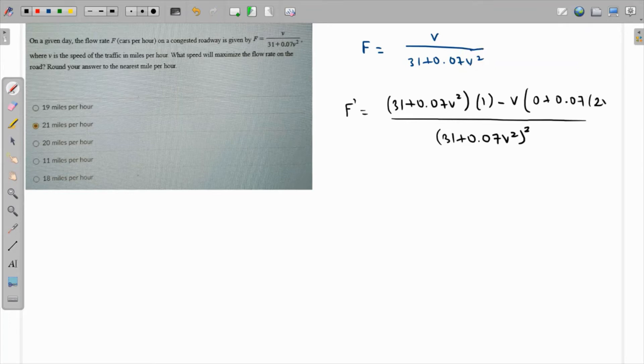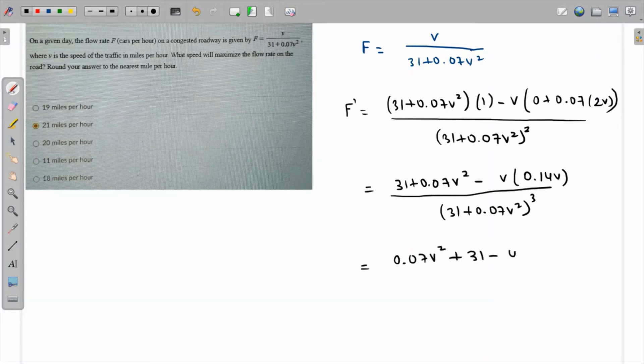This becomes (31 + 0.07V² - 0.14V²)/(31 + 0.07V²)². So we have (0.07V² + 31 - 0.14V²)/(31 + 0.07V²)².